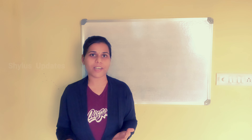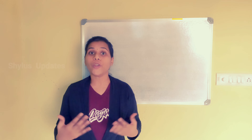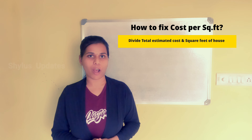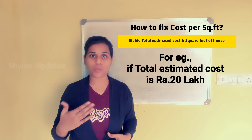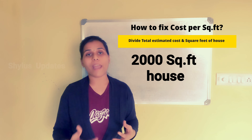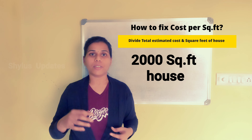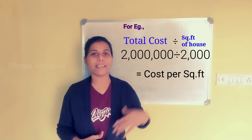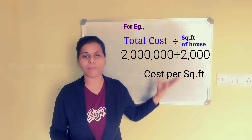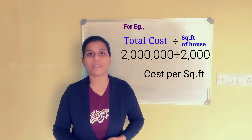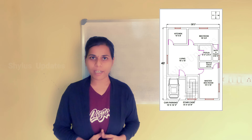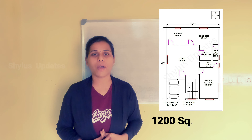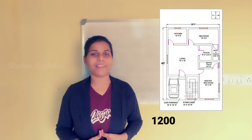How do you fix the construction cost per square feet? Now, in your hand, you have the total estimation cost of your house. For example, if the total estimated cost is Rs. 20 lakhs and the square feet is 2,000, dividing 20 lakhs by 2,000 square feet gives you the construction cost per square feet. Recently, we did an estimation for a 30 feet by 40 feet house — that is 1,200 square feet. I will explain with that estimation today so that you understand it clearly.